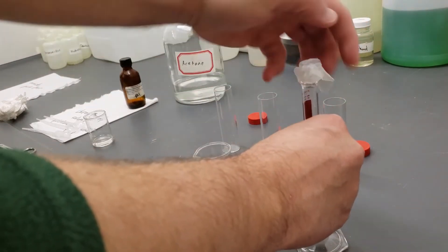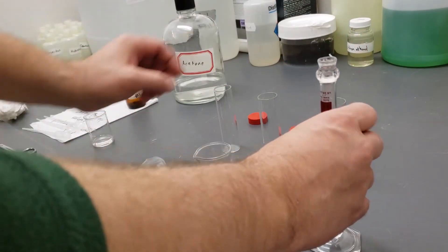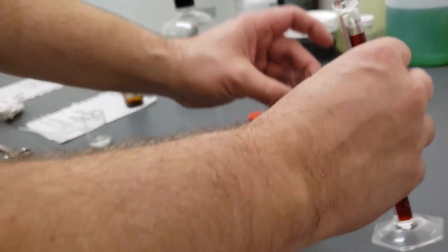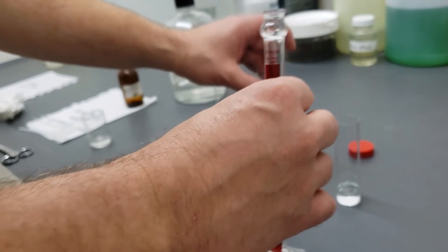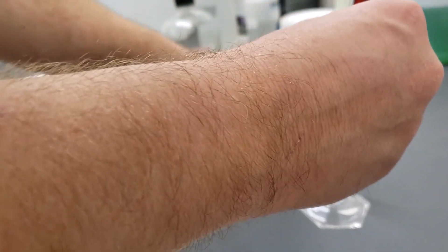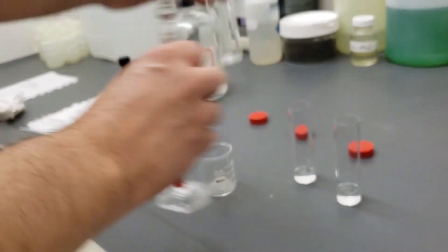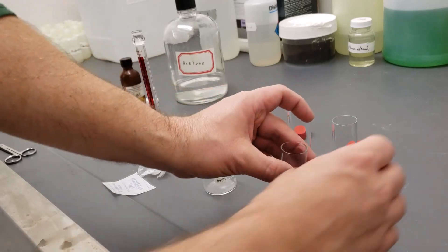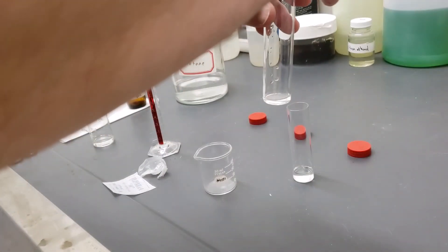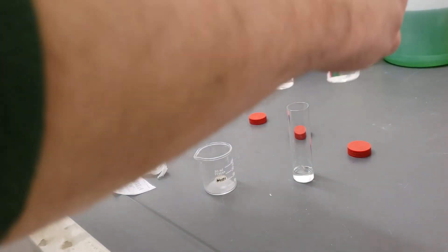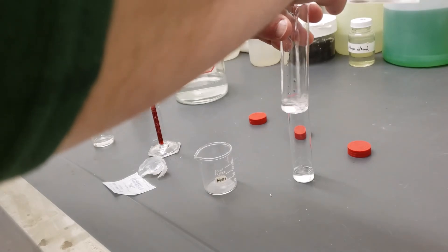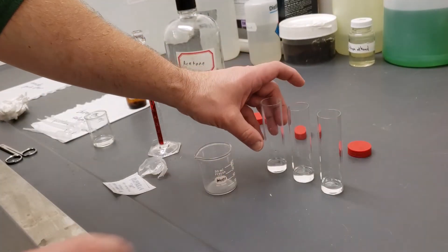And now I'm going to pour a couple mils in each chromatography chamber. Whoops, that was a little bit too much in that one. This part doesn't need to be precise. I just need a mil or two or three mils in each one, so there's enough solvent there to do the work of moving the pigments.